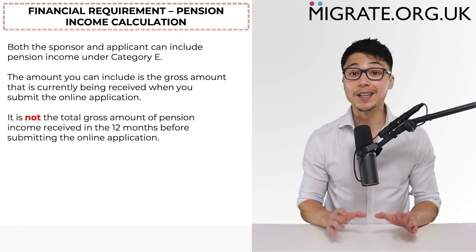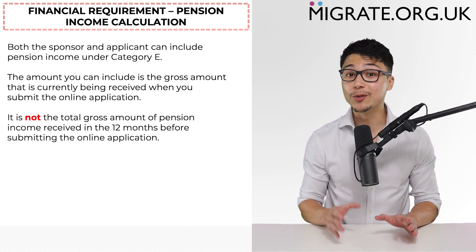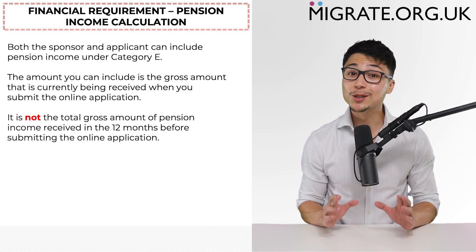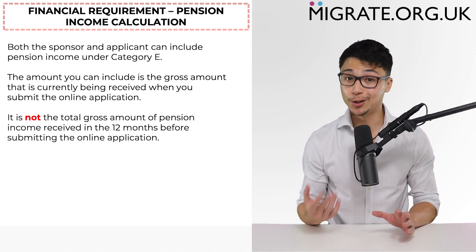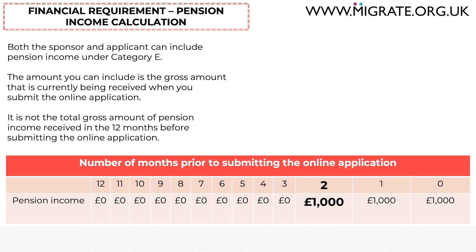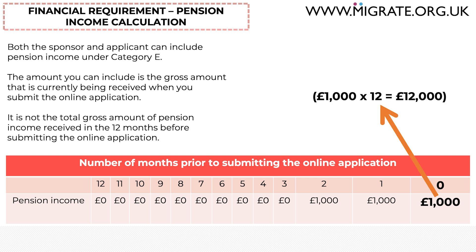I recently received an email from someone who purchased our DIY application pack service who was not sure what the difference was between the two, so I'll quickly explain. Here you can see that the person started to receive £1,000 a month in pension income two months before the submission of the application. Since, when the online application will be submitted, the person will be receiving £1,000 a month, the amount of income that they can include towards the financial requirement from pension income will be £12,000 — which is the relevant equivalent gross annual income figure. The relevant figure here will not be £3,000.